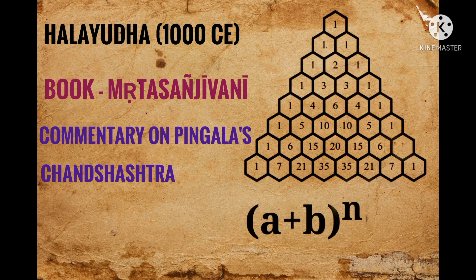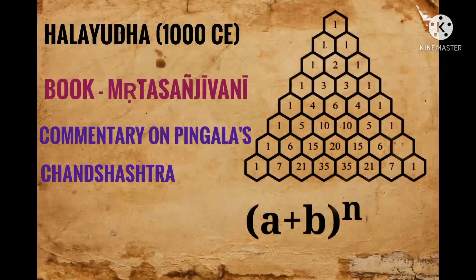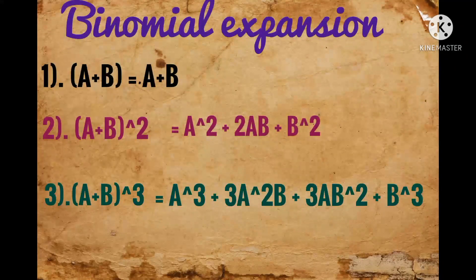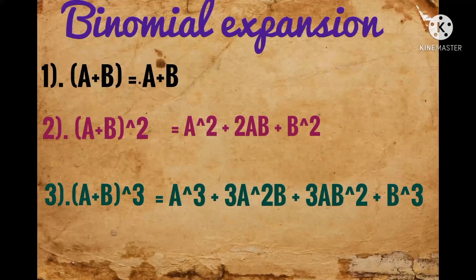What do we have here? It is the same as Pascal's Triangle, described by Pascal who was born in 1623. This table gives in every nth line the coefficient of (a + b)^(n-1). That is, the first line gives the coefficient of (a + b) as 1 and 1. The second line gives 1, 2, and 1 as the coefficient of (a + b)².